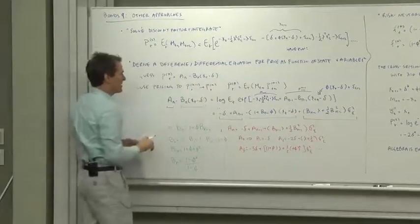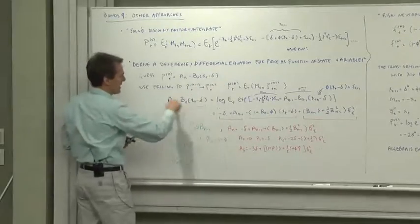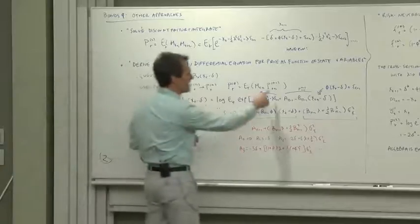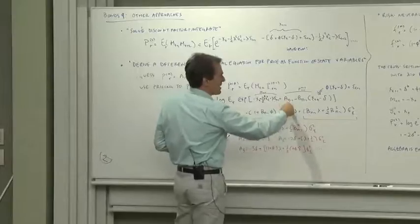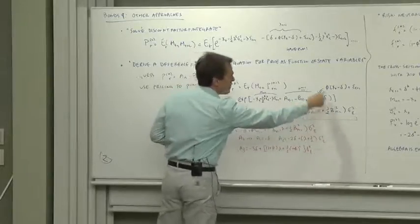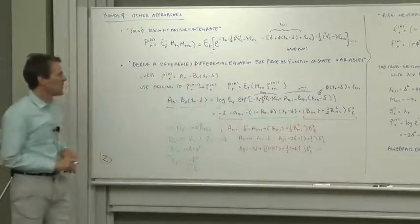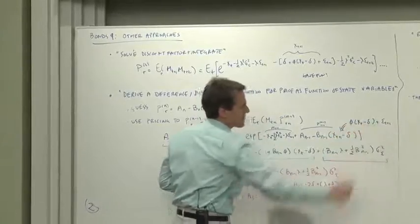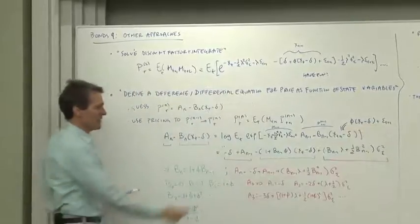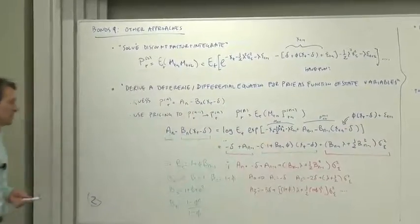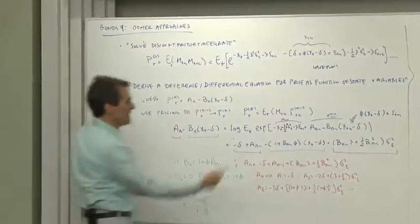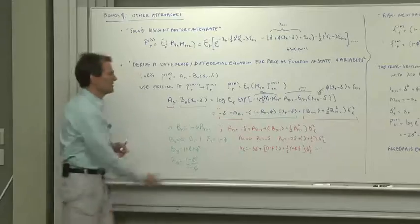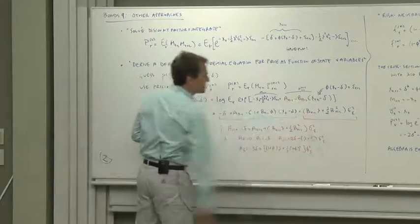The price of the n period bond is, by assumption, an minus bn xt minus delta. The price of the n minus 1 period bond next period is an minus 1 minus bn minus 1 xt plus 1 minus delta. We're going to substitute there for what today's xt plus 1 in terms of today's x, and we have our friend the discount factor right there. Okay, now we take this expected value of e to all that stuff. We get the stuff and the half sigma squared terms.